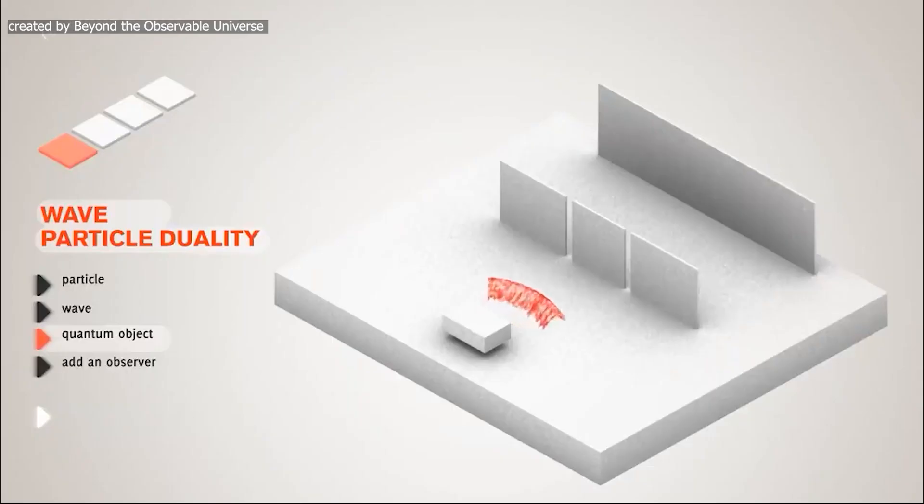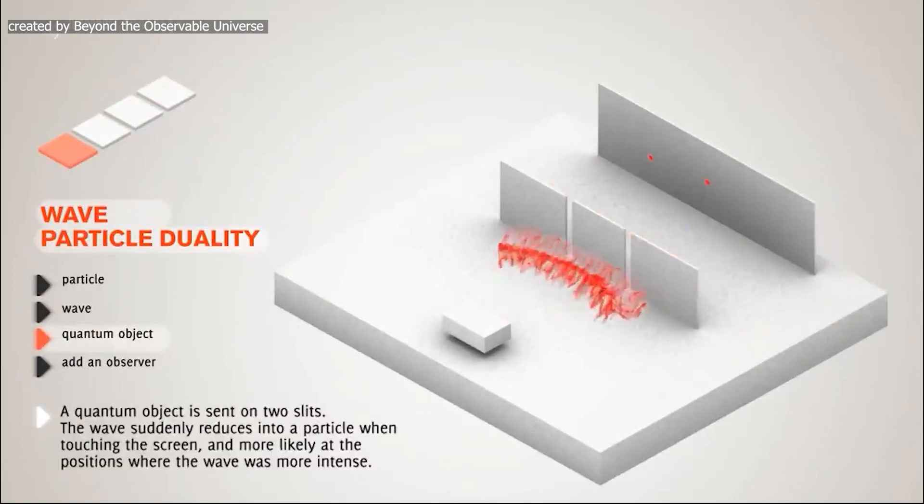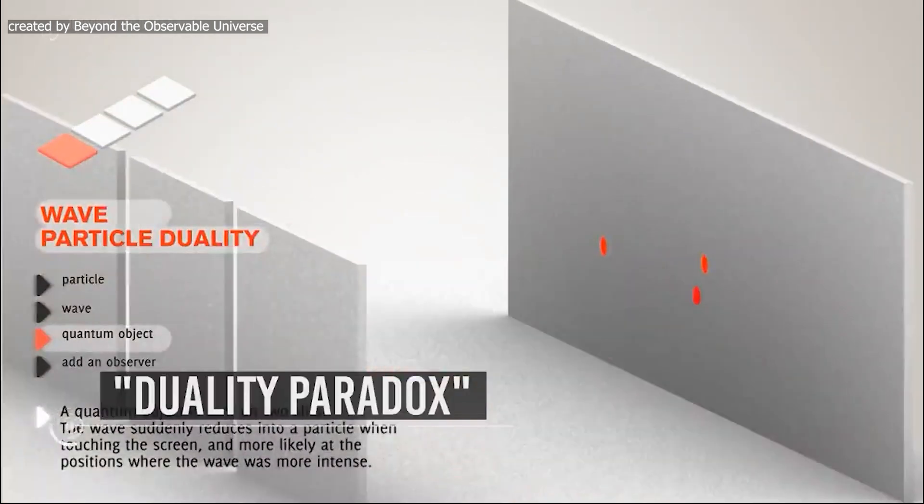In the quantum world, particles like electrons and photons can exhibit both wave- and particle-like behaviors simultaneously. It's as if they dance between the boundaries of reality, challenging our intuition.